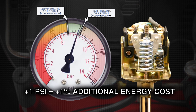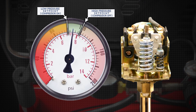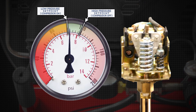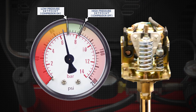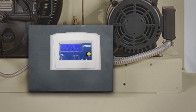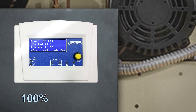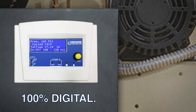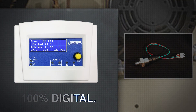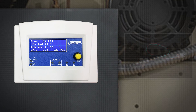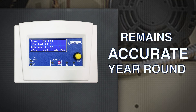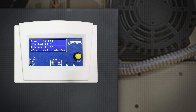For each PSI below the set point, there is a reduction in air tool performance, which directly affects work quality. Air compressors outfitted with the compressor controller are 100% digital. With constantly calibrated digital sensors, the pressure band gap is consistently maintained and remains accurate year-round without any drifting, no matter the environmental conditions.